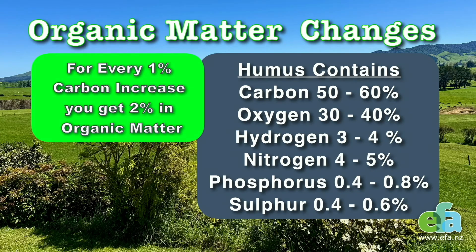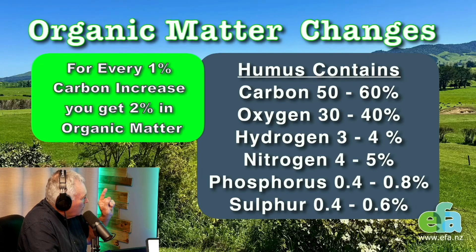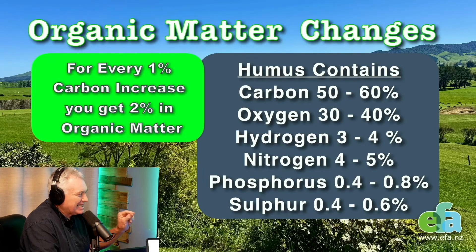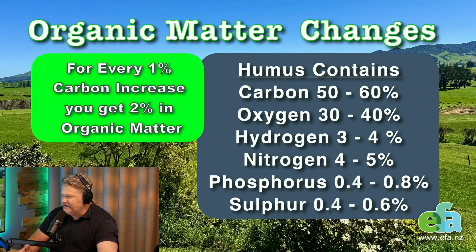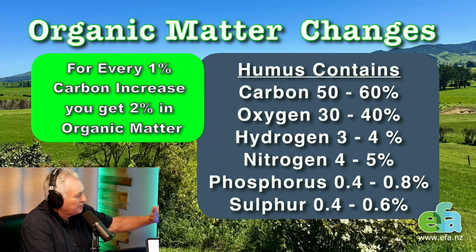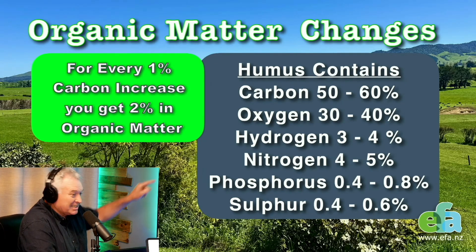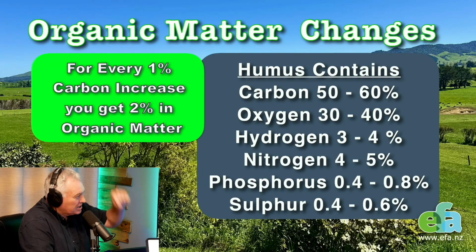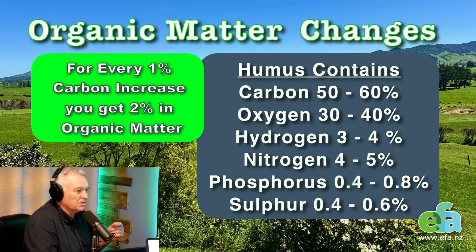We've got to notice the difference between organic carbon increase and organic matter. So 1% organic carbon is equivalent to 2% organic matter — that's something to get your head around. And just look over to the right-hand side of the screen: humus contains 50% to 60% carbon. So you get organic carbon in the soil and you just double it up to get the amount of humus.